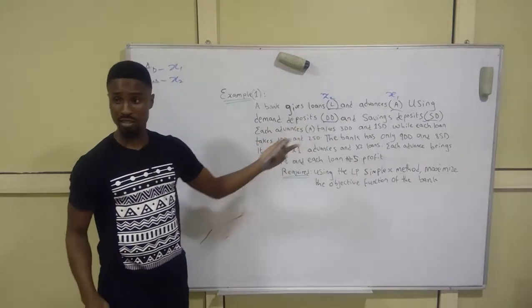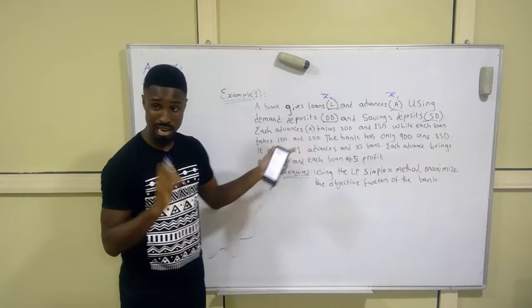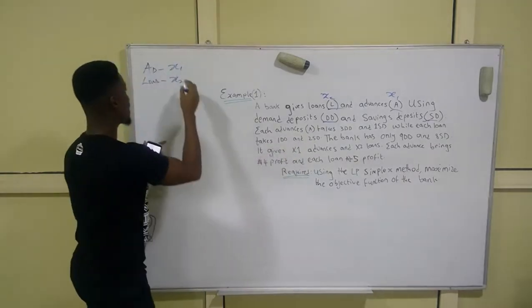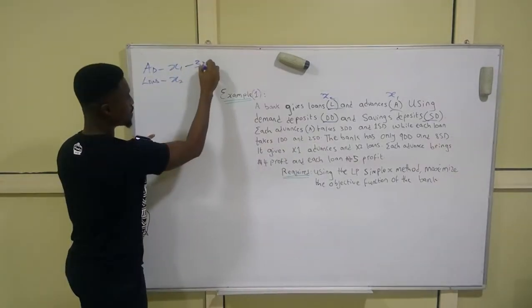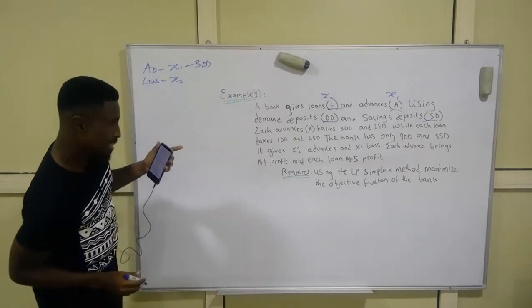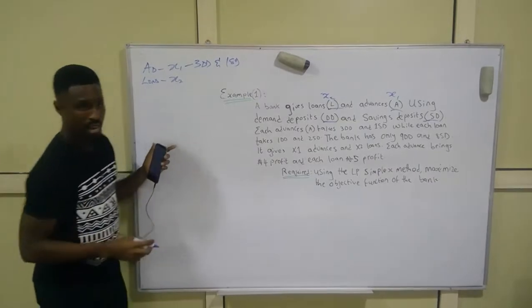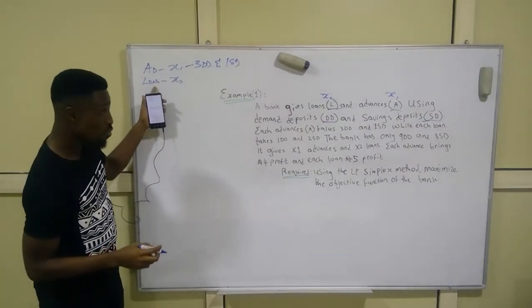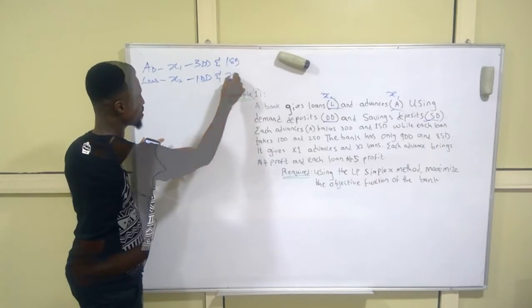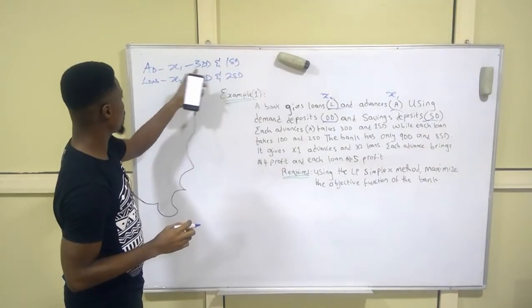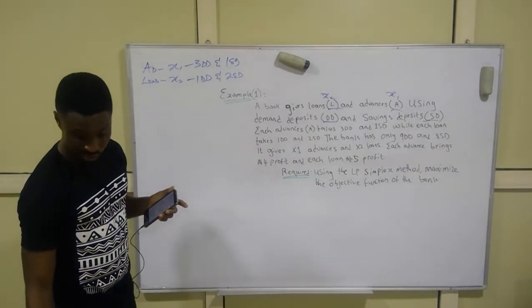Each advance (x1) takes three demand deposits and one savings deposit. Each loan (x2) takes one demand deposit and two savings deposits.